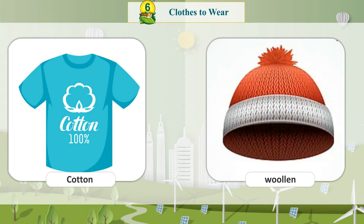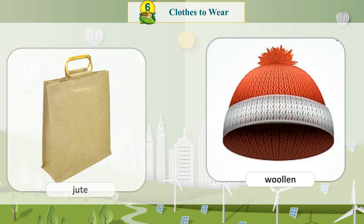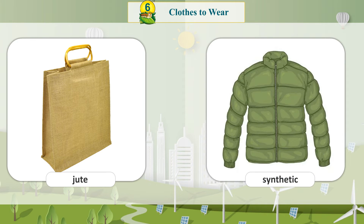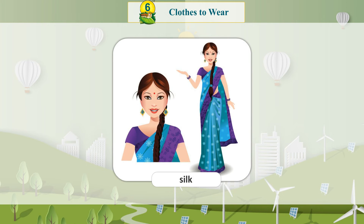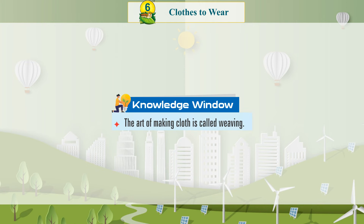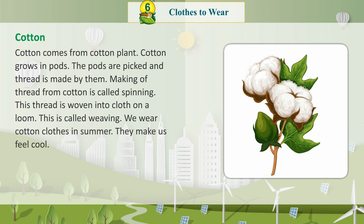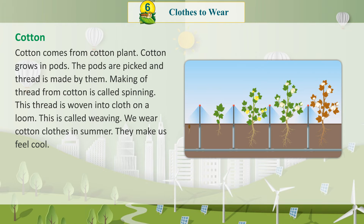The different types of fabrics are: Cotton, Woolen, Jute, Synthetic, and Silk. Knowledge Window: The art of making clothes is called Weaving. Cotton comes from the cotton plant.